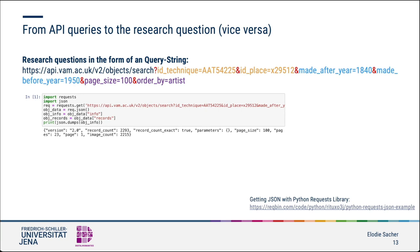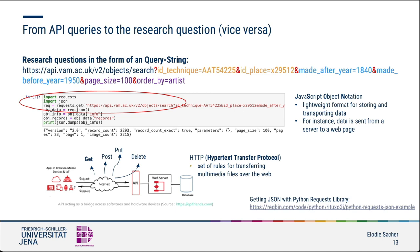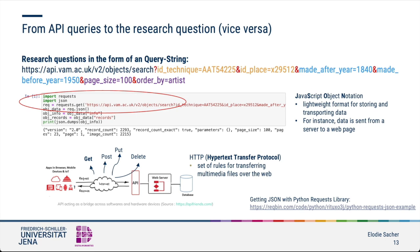With these questions in mind, let's get back to the API string. At first glance, you can see that the API string is embedded in code. The entire query string in the form of a URL contains an HTTP GET request, a controlled vocabulary and several parameters to limit the number of objects potentially returned. The format of the output data is JSON. We imported the requests package and the JSON module. The requests library is a popular library for sending HTTP requests — POST, GET, DELETE — in Python. At the end of the code, the response from the museum server is retrieved using the print function and the JSON dumps method.